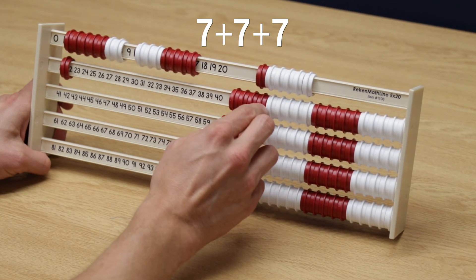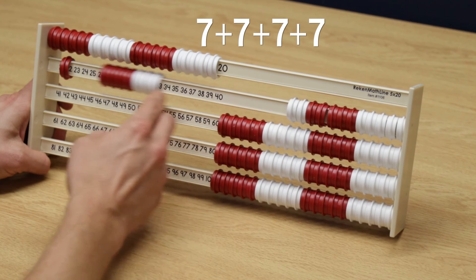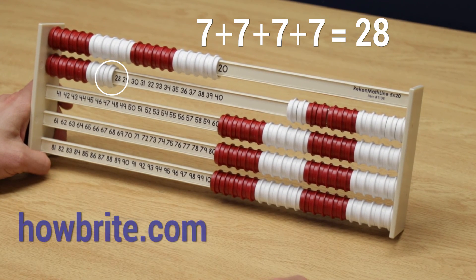[Counting one through seven] And there's our last group of 7. We multiply and we get the product 28.